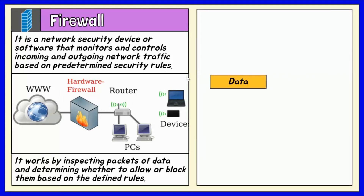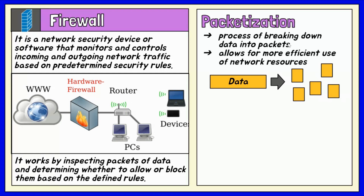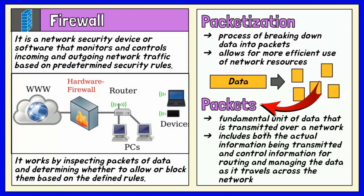When data is transmitted over the network, it is often broken down into smaller packets for efficient and reliable transmission. The process of breaking down data into packets is known as packetization. A data packet is a fundamental unit of data transmitted over a network — a formatted unit that includes both the actual information being transmitted and control information for routing and managing the data. This allows for more efficient use of network resources, as each packet can take a different route to reach its destination, and it enables error detection and correction.